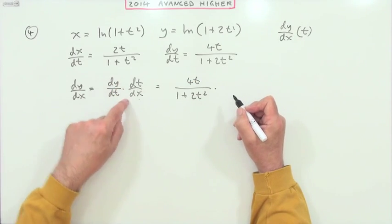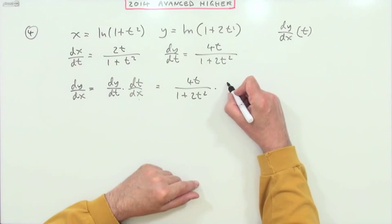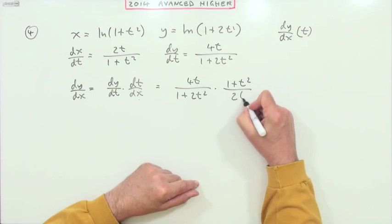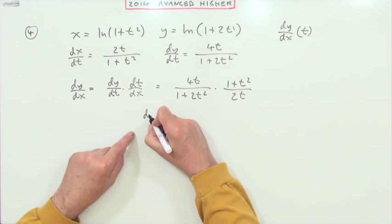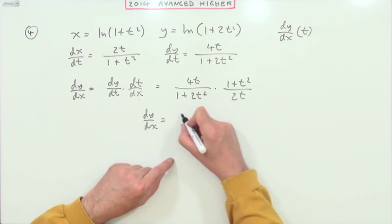dt/dx, something with that reversed, that would be the reciprocal of it, so one plus t squared over 2t. So I've got dy/dx will be that.